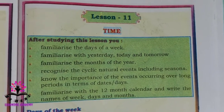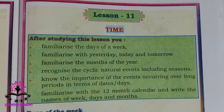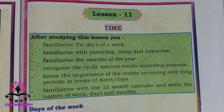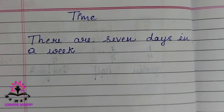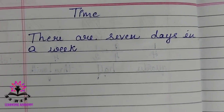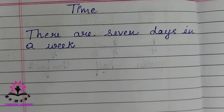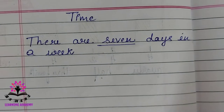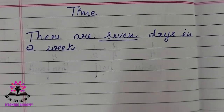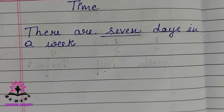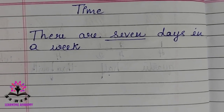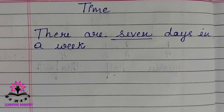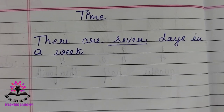Hello students, in today's class we are going to study a new chapter — Time, lesson number 11 from your Class 2 mathematics textbook. We know that there are seven days in a week. Those seven days are: Sunday, Monday, Tuesday, Wednesday, Thursday, Friday, and Saturday.